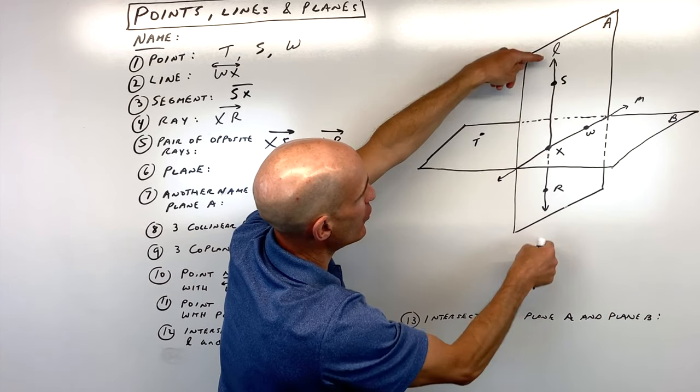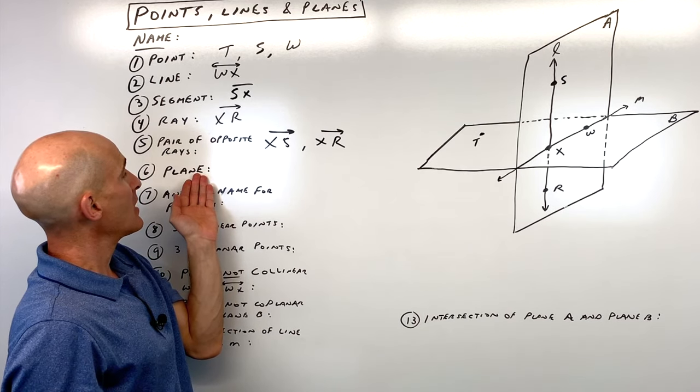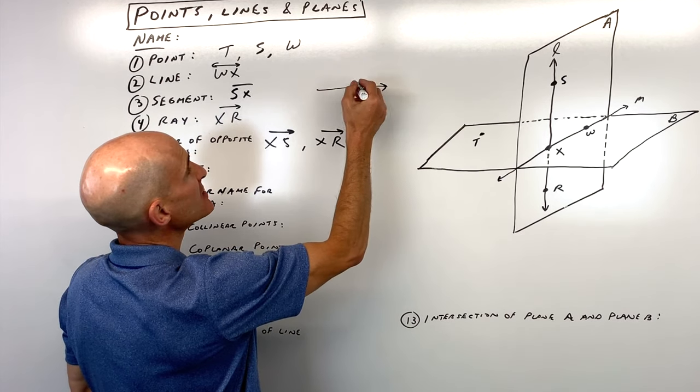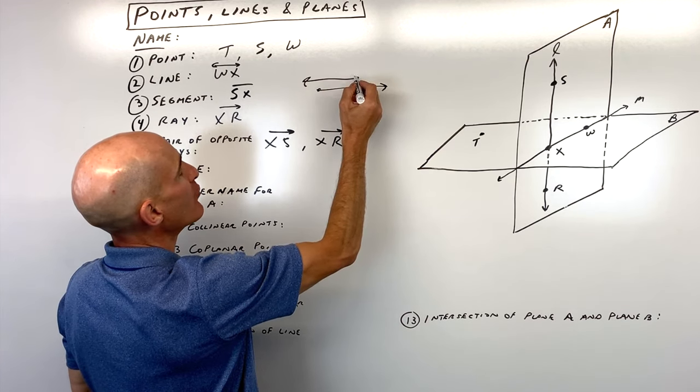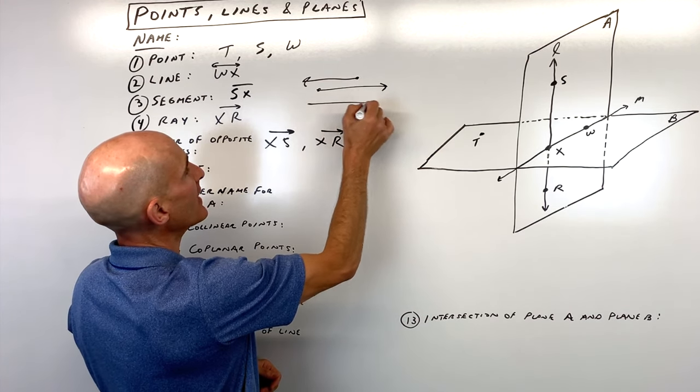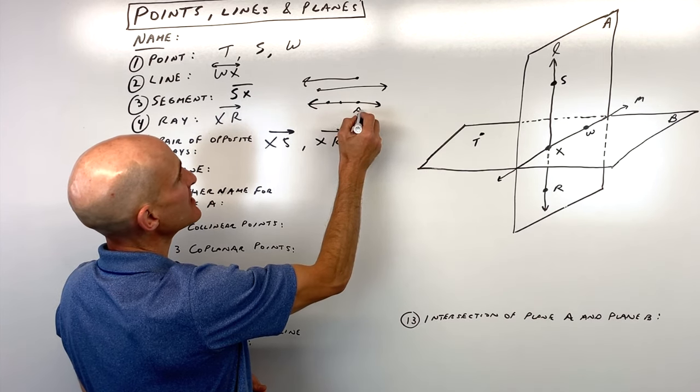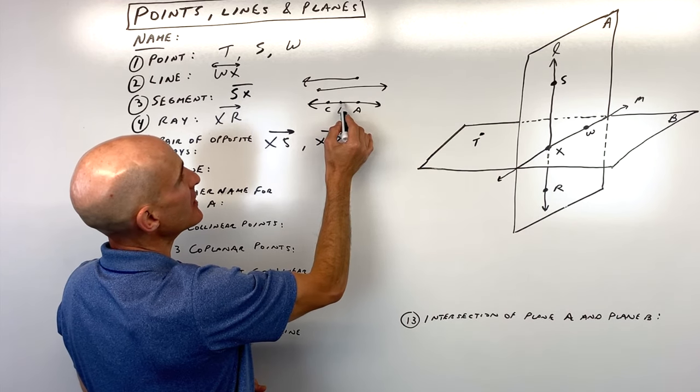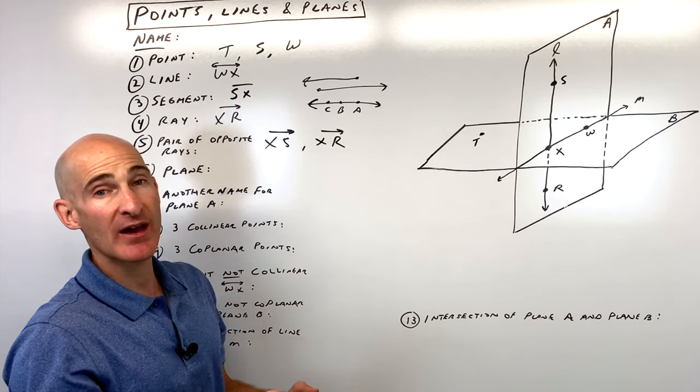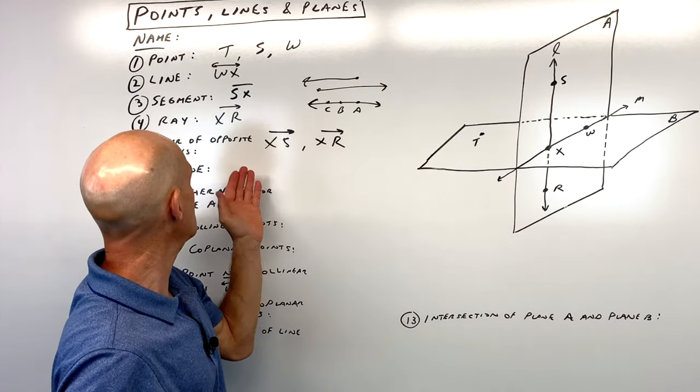What you don't want, by the way, is you don't want this situation where it's like, see how these have different endpoints? Like you don't want them to be like, I'll just see if I can draw it like this. You wouldn't want this to be, let's say this is ABC. You wouldn't want to do ray AC and ray BA because then they don't have the same starting point. You want it to have the same starting point. And then from there, go 180 degrees opposite.